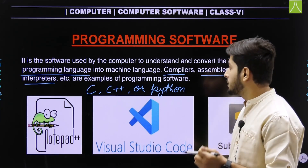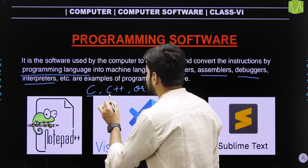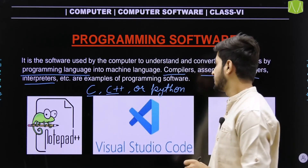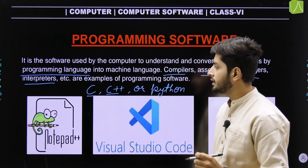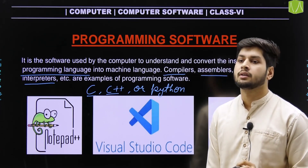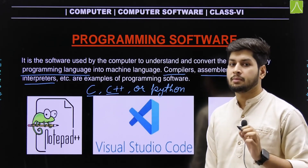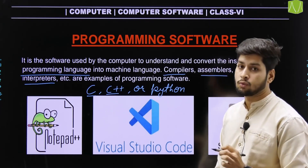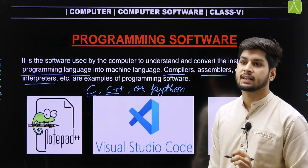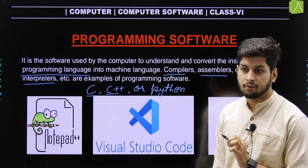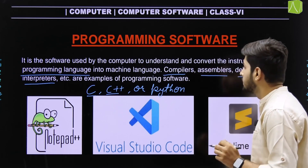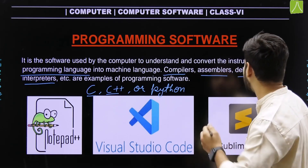Basically C and C++ are compiled languages. What does compiled language mean? Compiled language means that whatever code is written, the compiler compiles it all at once, and all the errors are shown at one time.